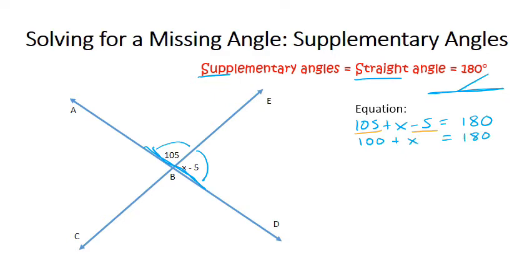So now I can kind of imagine I could rewrite this problem to solve for x. I could do 180 minus 100 to solve for x, which would give me 80. So now I know what x is. X is 80, and now I'm ready to find my missing angle.